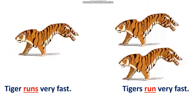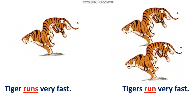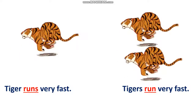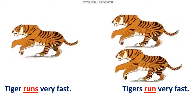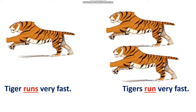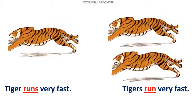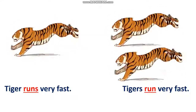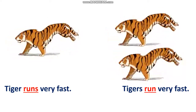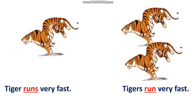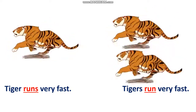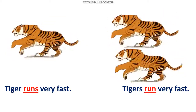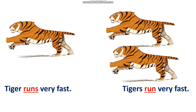Now let's see another example. 'Tiger runs very fast.' Here, we are talking about one tiger, so S will be added to run, which is a verb here, and it will become runs. But on the other hand, if there are more than one tiger, then we will not add S to the verb. For example, 'Tigers run very fast.'